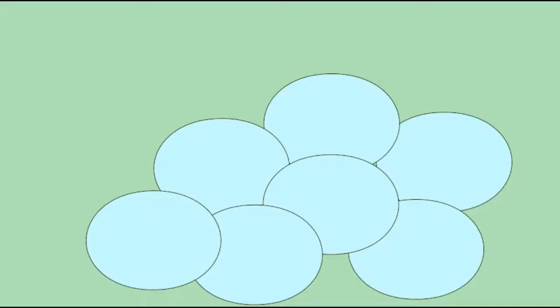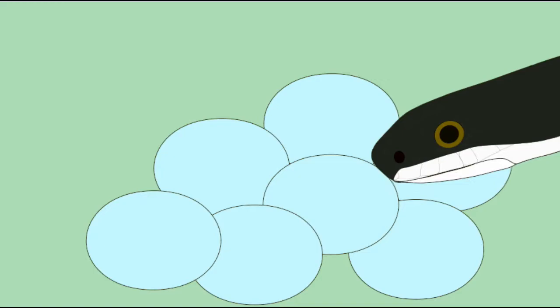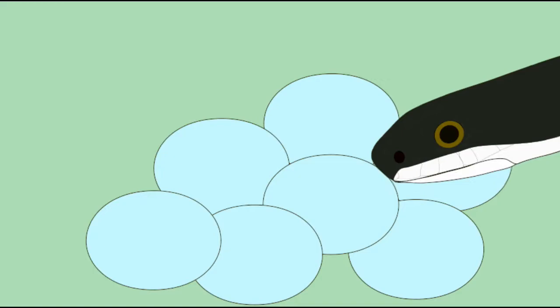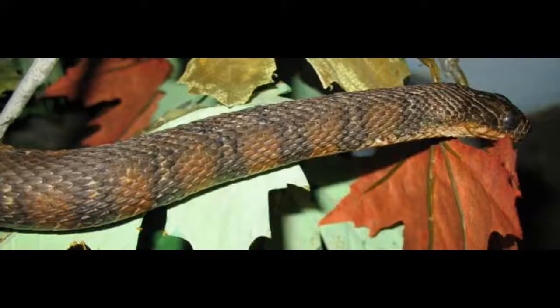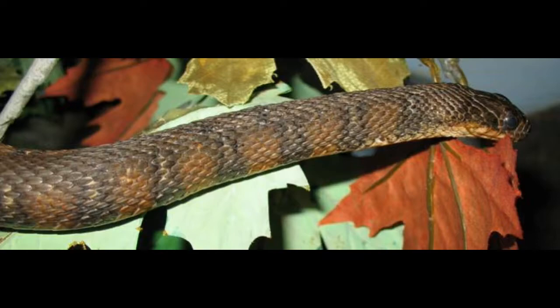Some snakes are specialists and have one particular type of organism as a major food item. So black rat snakes, which are very good at climbing trees, can prey on birds, eggs, and small birds. While hog-nosed snakes eat a large number of toads as part of their diets.